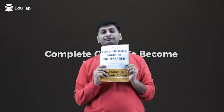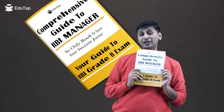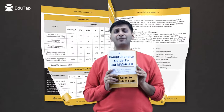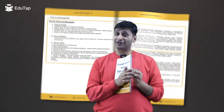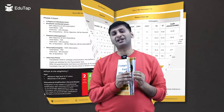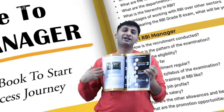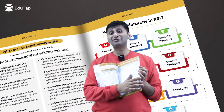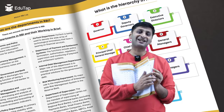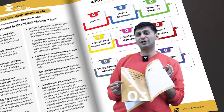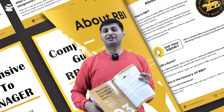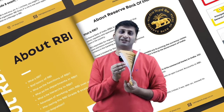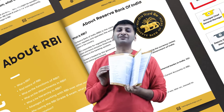So the first book that you need to read is the Comprehensive Guide to RBI Manager, which is made by our team related to the RBI. It covers full information — the departments, what functions are there, what promotions are, what the exam pattern is, what subjects and syllabus are there, what the cutoffs are, what the best resources are, what the salary and enhanced salary are — everything you want to know about RBI or the exam.